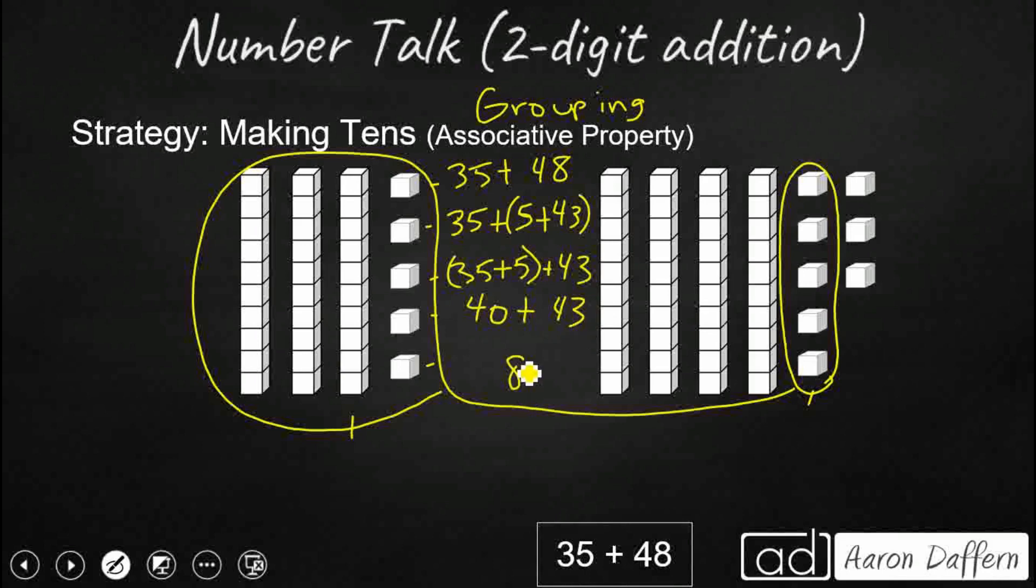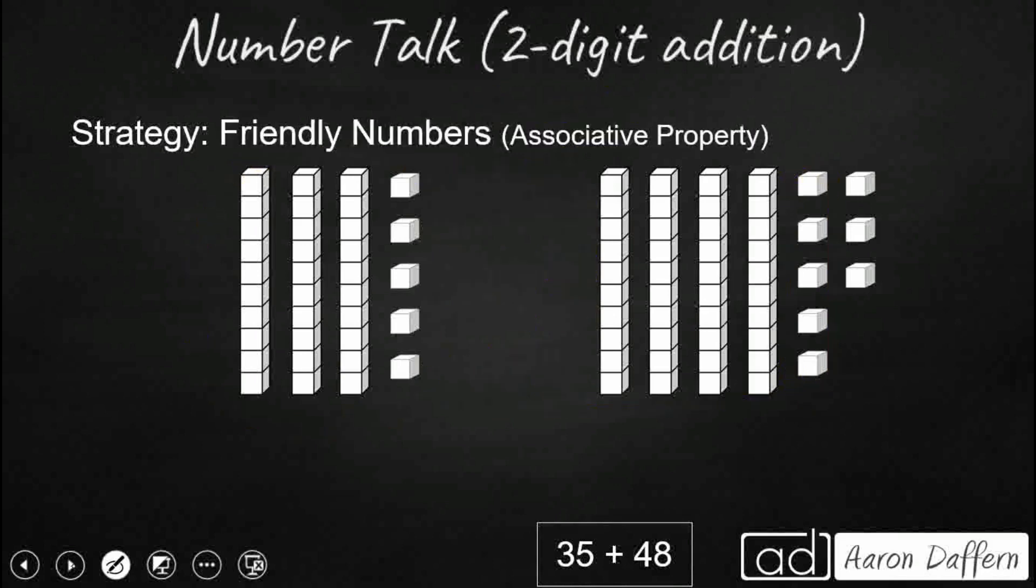I'm going to get 40 and then I'm going to still have my 43 leftover. So 40 plus 43, hopefully you got the answer of 83. So that's how we can use the associative property to make a 10.